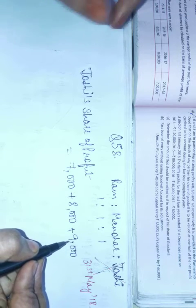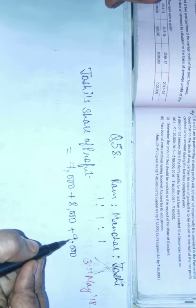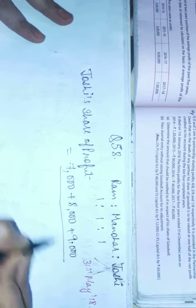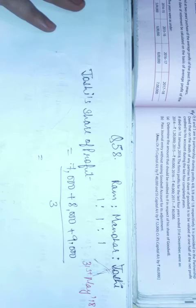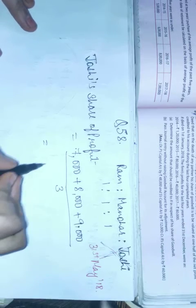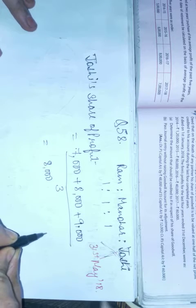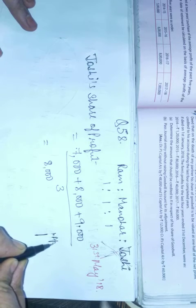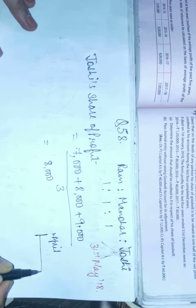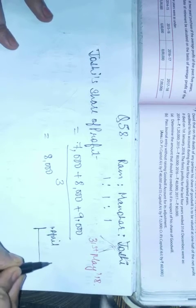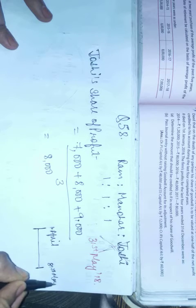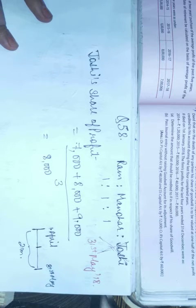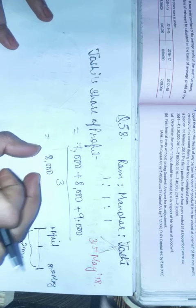One question I have already solved for you before in the same language, so you can see it from the extra working notes. Then we divide this by 3, so here we get 8000. Now see, Joshi died on 31st May, meaning if our year started from 1st April, then Joshi left us on 31st May. So he stayed with us for two months. So from May we will calculate two months' profit.